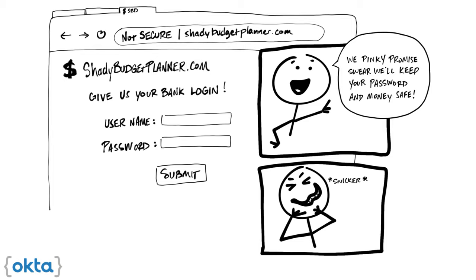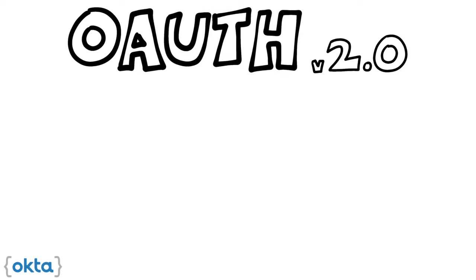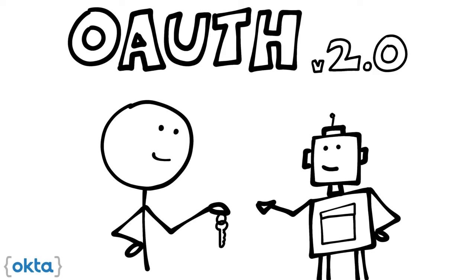Today, we have agreed-upon standards to securely allow one service to access data from another. The first standard we need to cover is OAuth. OAuth 2.0 is a security standard where you give one application permission to access your data in another application. Instead of giving them your username and password, you can essentially give one app a key that gives them specific permission to access your data or do things on your behalf in another application. The steps to grant permission or consent are often referred to as authorization or delegated authorization. You can also take back that key whenever you wish.